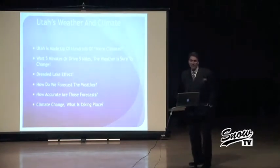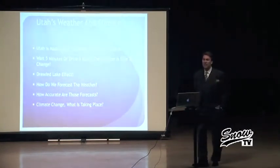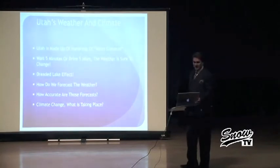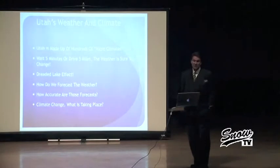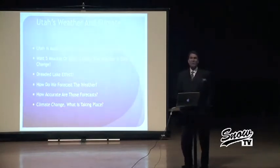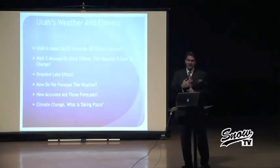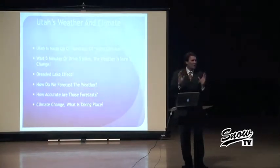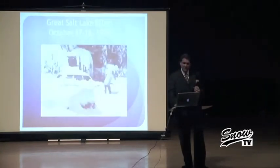Now Utah's made up of hundreds of microclimates. Wait five minutes to drive five miles and the weather is sure to change. Is that true? All right, dreaded lake effect. We have to deal with that along the Wasatch Front. That's probably the hardest thing for a meteorologist to forecast. It's very different. How do we forecast the weather? How accurate are those forecasts? Climate change. I don't like the word global warming. I like to call it climate change. So we're going to talk a little bit about some of that stuff. What's taking place?